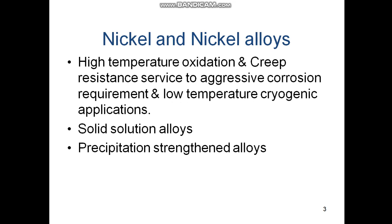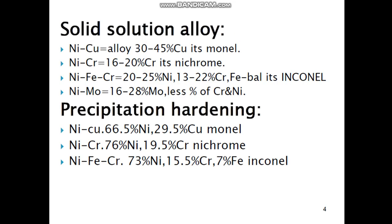Nickel-based alloys are either solid solution alloys or precipitation-strengthened alloys. Solid-solution-strengthened alloys include nickel-copper alloys (Monel), nickel-chromium (Nichrome), nickel-iron-chromium, nickel-molybdenum, and chrome-nickel. Precipitation-hardening alloys are also found in Monel, Nichrome, and Inconel variants, but their compositions are slightly varied, with additions of aluminum and titanium to develop the precipitates.